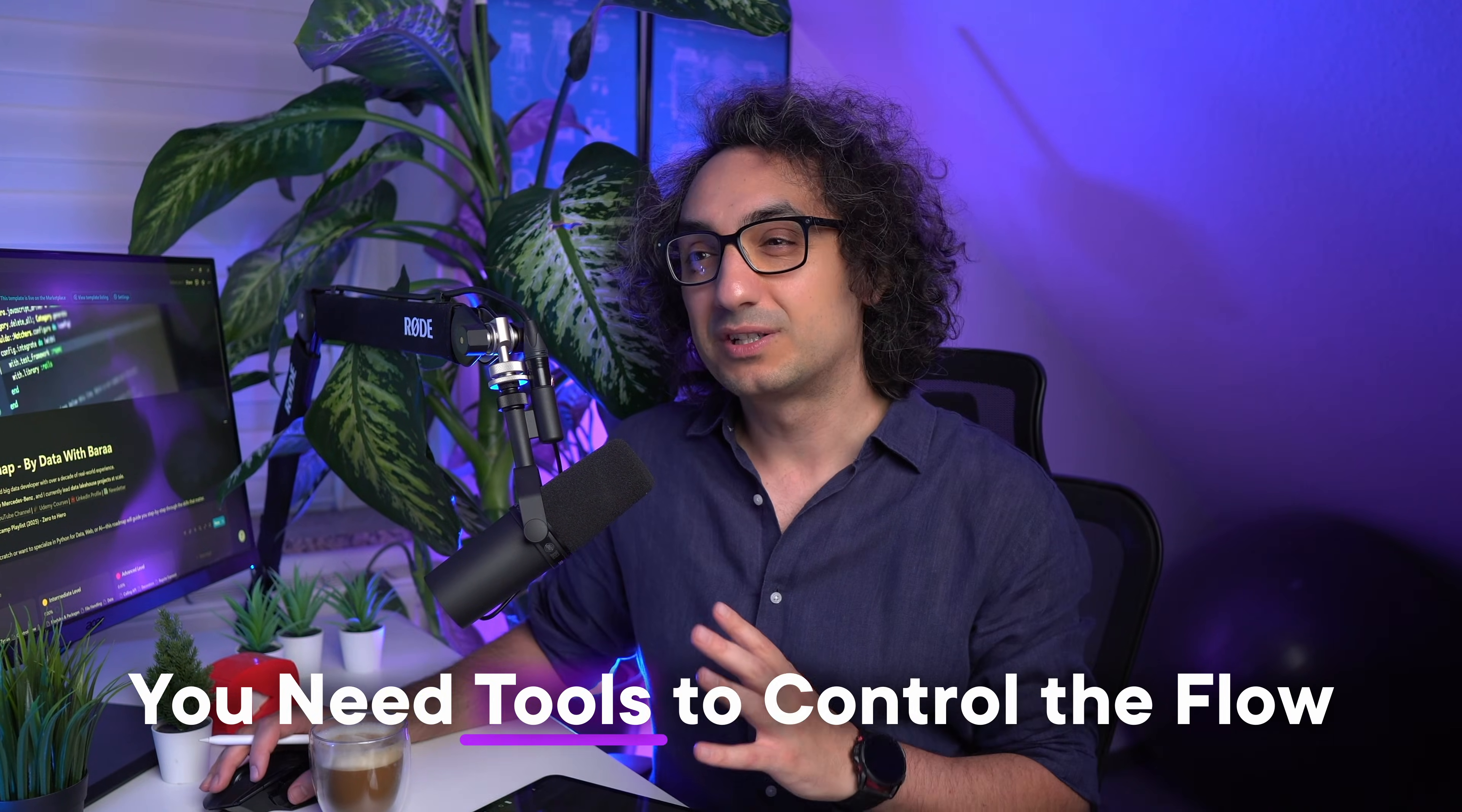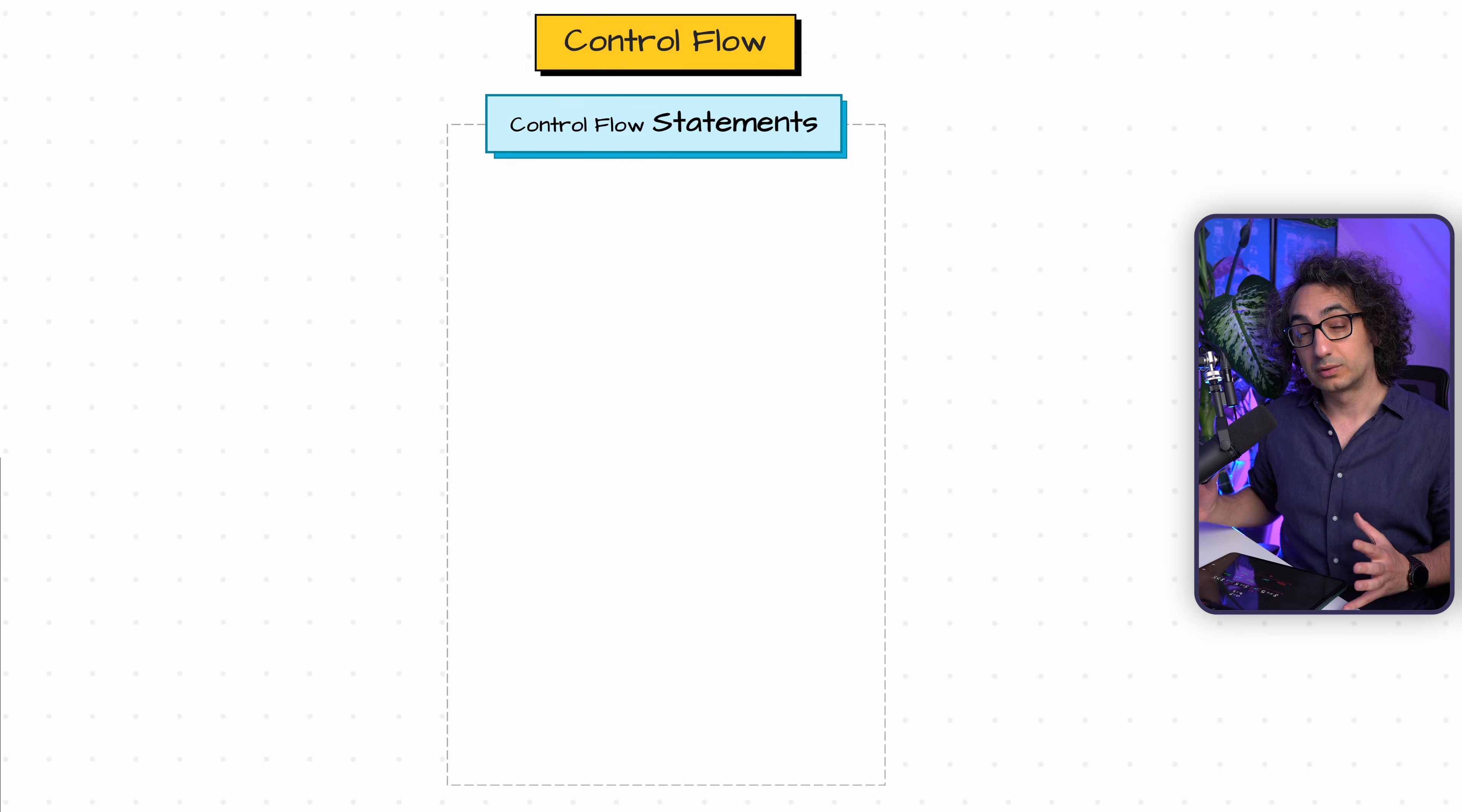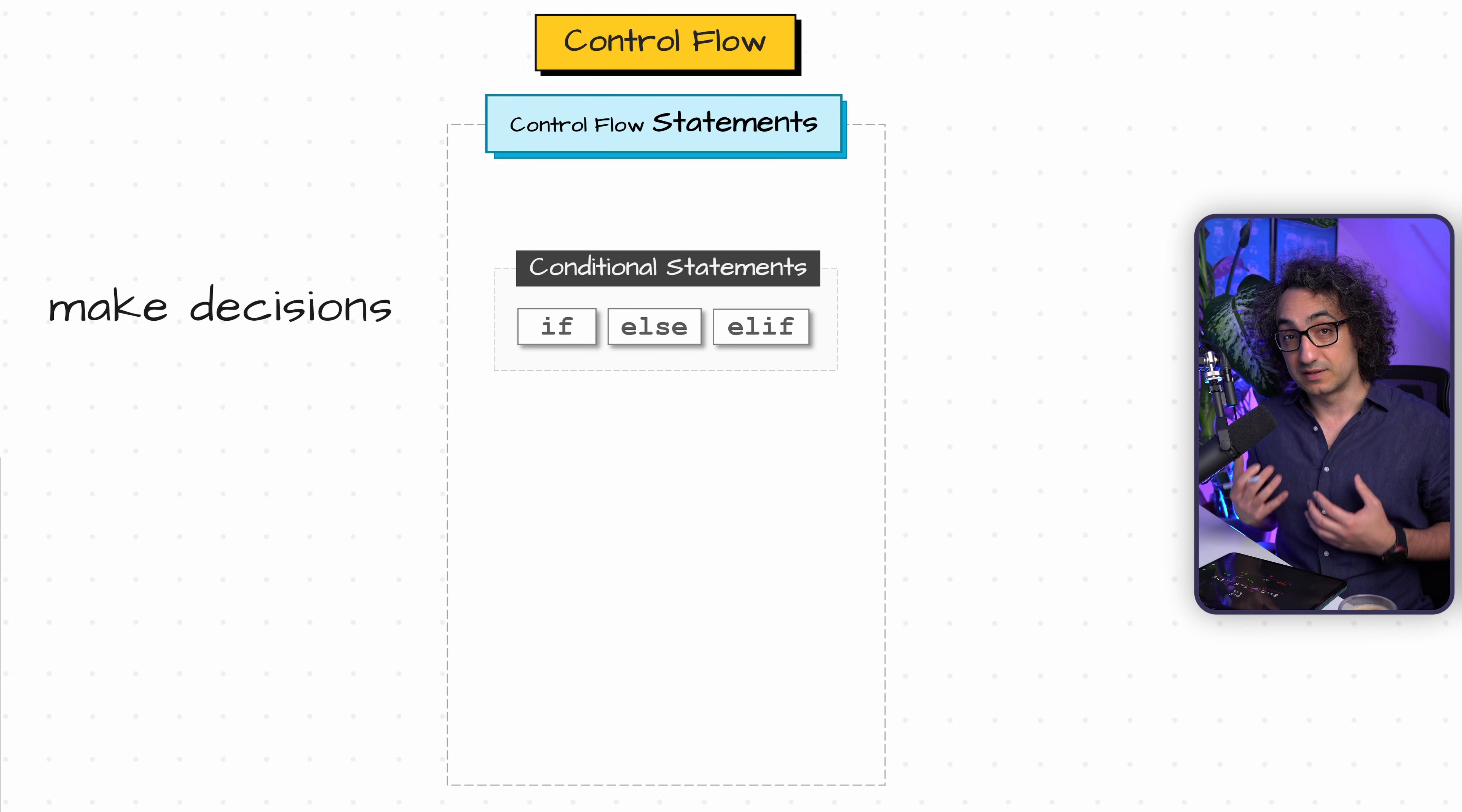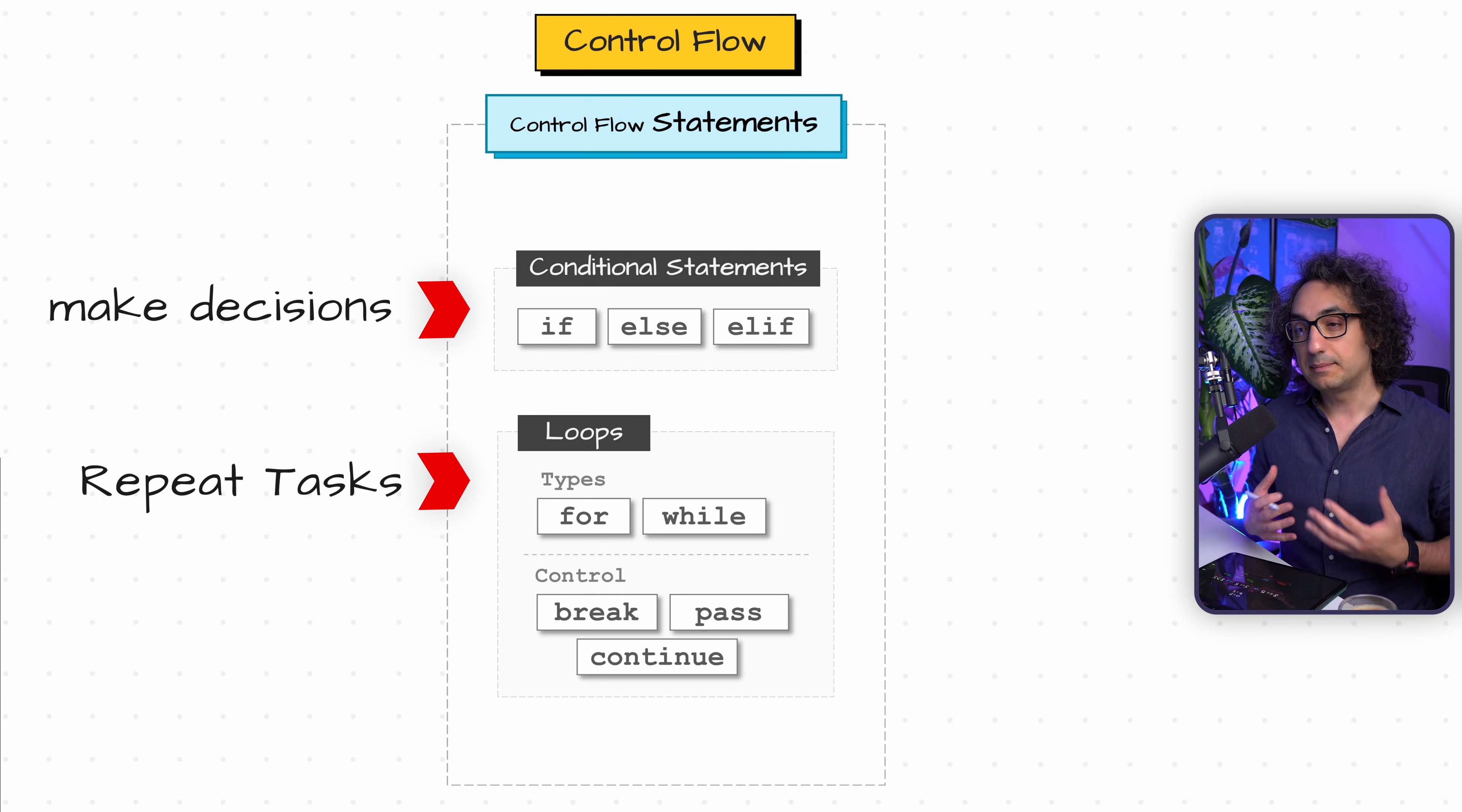Now in order to build all this stuff in Python, we need tools. I'm gonna show you the whole roadmap - all the tools that we can use to control the flow. I split it into two main sections. The first one is the control flow statements - they are like special instructions that you can use in Python to change the flow. Here we have two subsections: the conditional statements, if-else, else-if, so this stuff helps us to make decisions. The other section, we have the repetition, the loops. Here we have two important statements: the for loop and the while loop. As well, we have some statements to skip stuff like the break, continue, and pass.